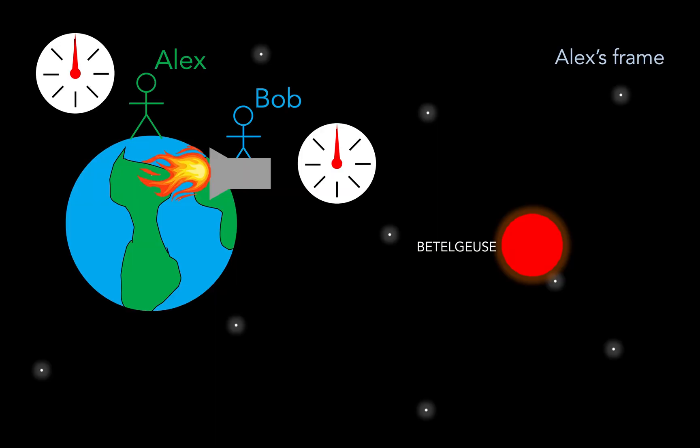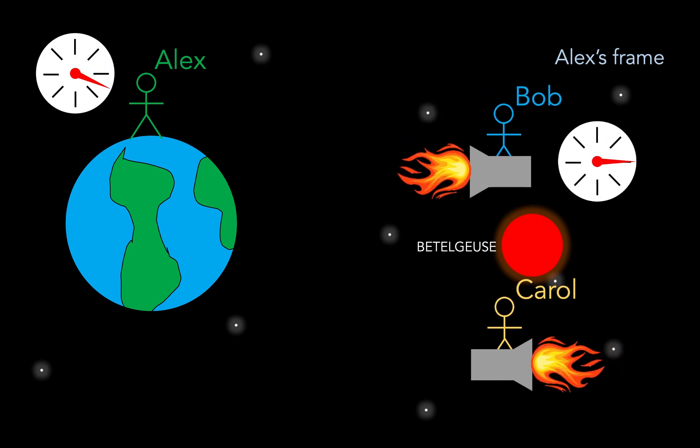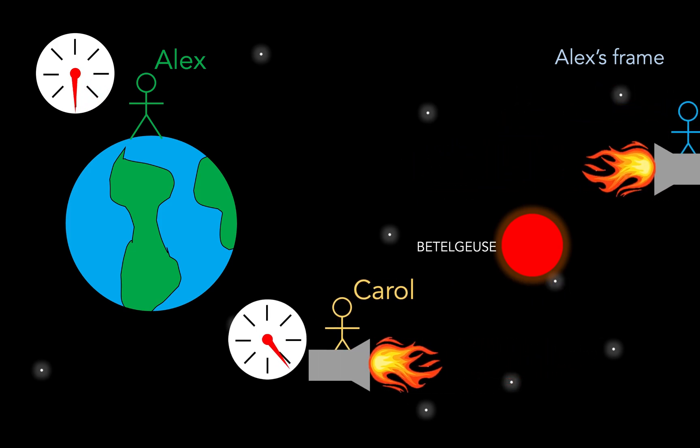And we can see this by reproducing the paradox in a situation where there is no physical acceleration at all. So imagine that Bob shoots off again on his spaceship, and as he reaches some nearby star, let's say Betelgeuse, he encounters a third observer, Carol, who is traveling at the same speed as Bob, relative to Alex, but in the opposite direction. So as they fly past each other, Carol reads the time off Bob's watch and sets her own watch to that time, then continues flying off to Earth.